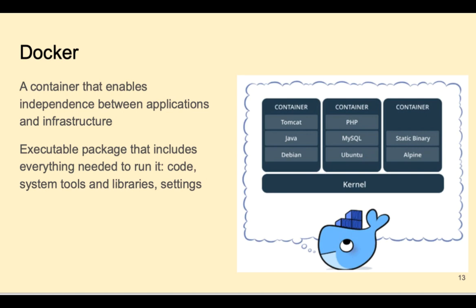Some experts estimate that by 2025, more than 85% of global organizations will be running containerized applications in production. One popular container application is Docker. If you have Docker running on your machine, you can have several different containers that compartmentalize the application and whatever infrastructure they need. These executable packages include everything needed to run: the code, system tools, libraries, and settings. For example, if you're running a machine learning application that depends on importing many libraries, you can incorporate all of that in the container and share the entire container with others.